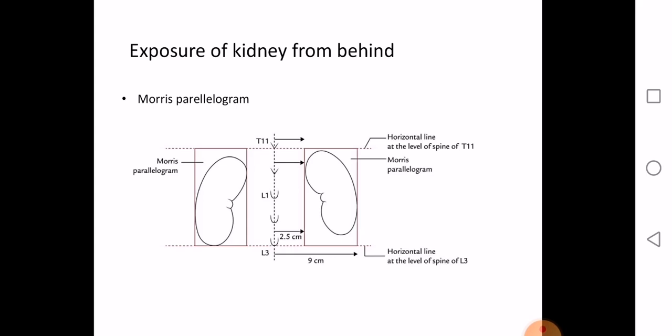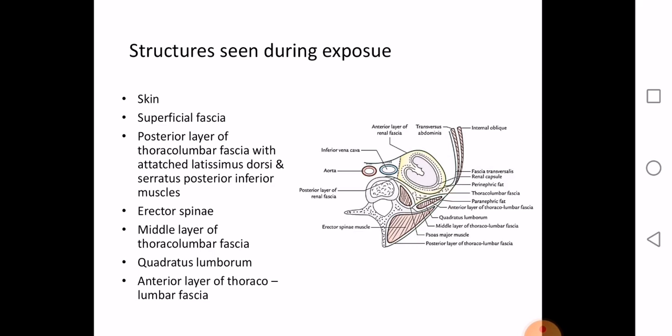Renal stones can be small or large. Small ones are usually passed out. Larger stones can obstruct the calyces and may require intervention. One method is extracorporeal shockwave lithotripsy, where shockwaves generated from outside the body are passed through body tissues to crush the stones, which are then passed out through urine. Alternatively, a nephroscope can be used to remove them.